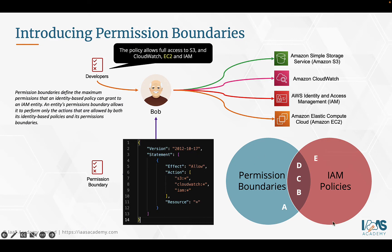In this Venn diagram, permission boundaries allow permissions A, B, C, and D, whereas the IAM policies allow permissions B, C, D, and E. As mentioned, both the permission boundaries and the IAM policies need to be aligned. Any user or role affected by this permission boundary and set of IAM policies will only be able to use permissions B, C, and D. Permission A is not applicable because it's not in the IAM policy, and permission E is not applicable because it's not part of the permission boundary.